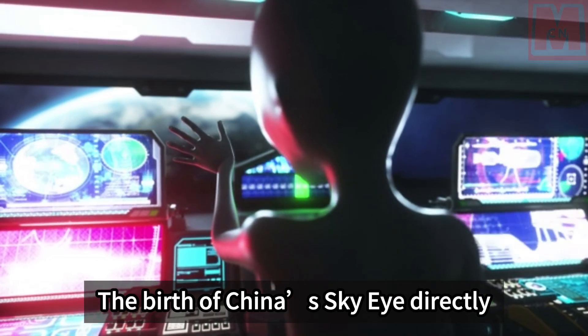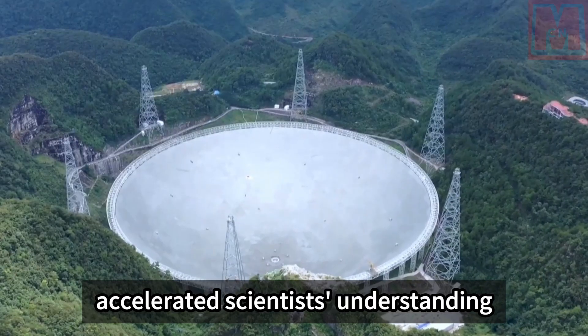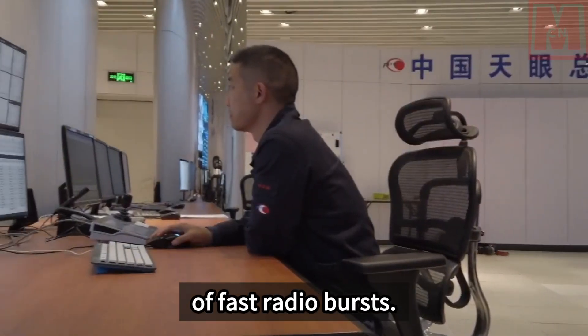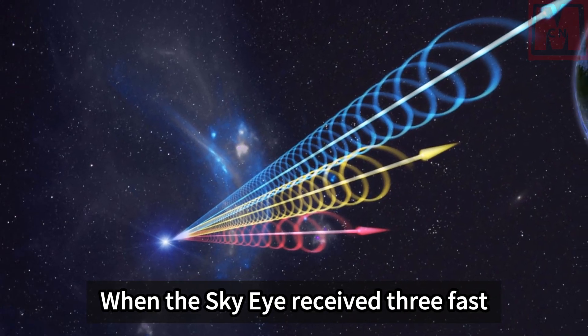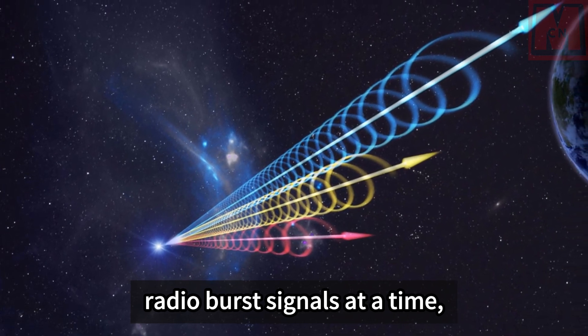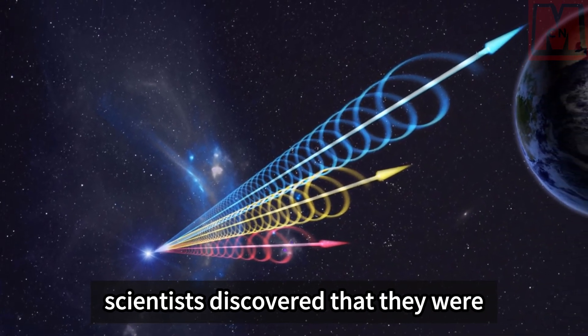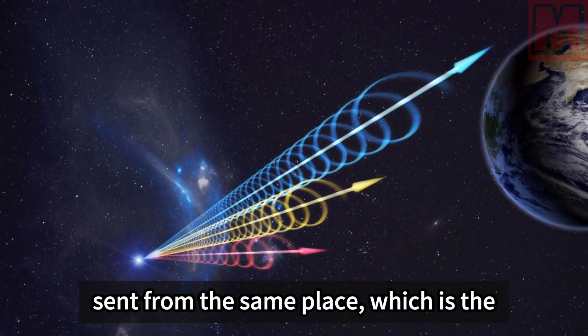The birth of China's sky eye directly accelerated scientists' understanding of fast radio bursts. When the sky eye received three fast radio burst signals at a time, scientists discovered that they were sent from the same place, which is the magnetar.